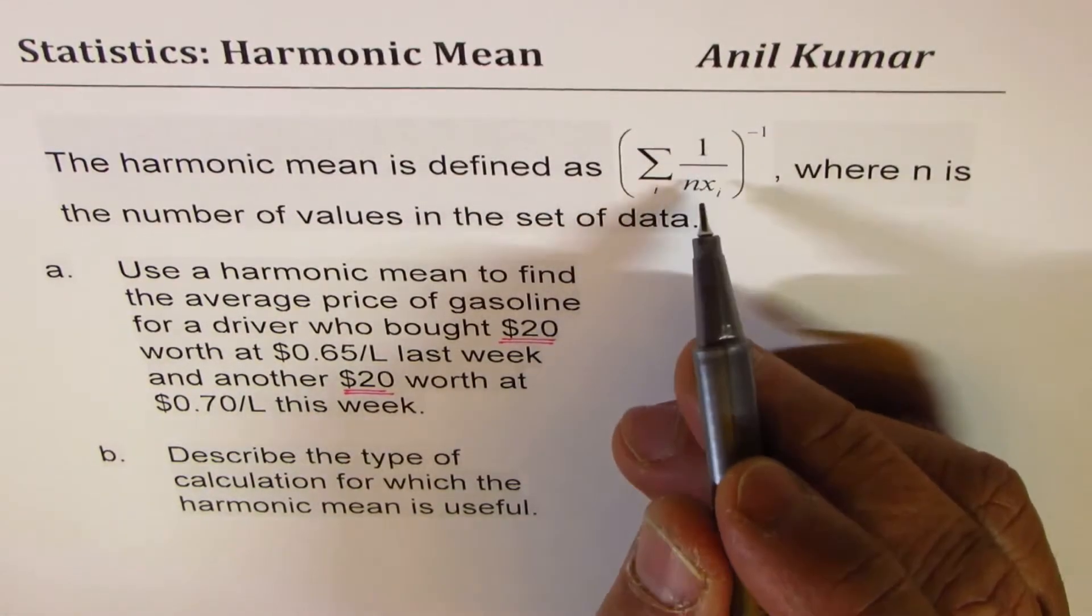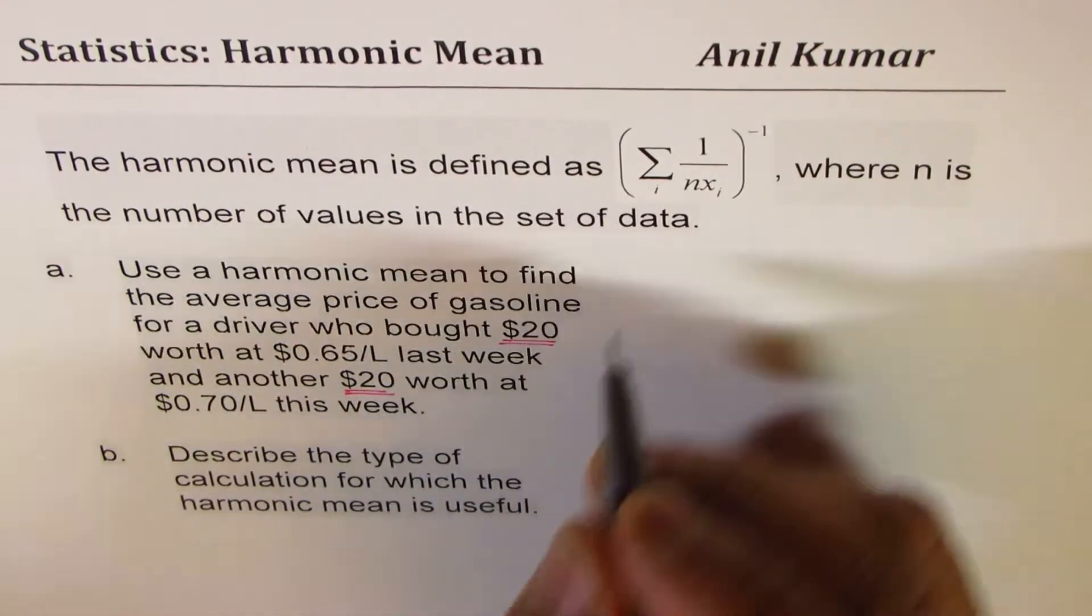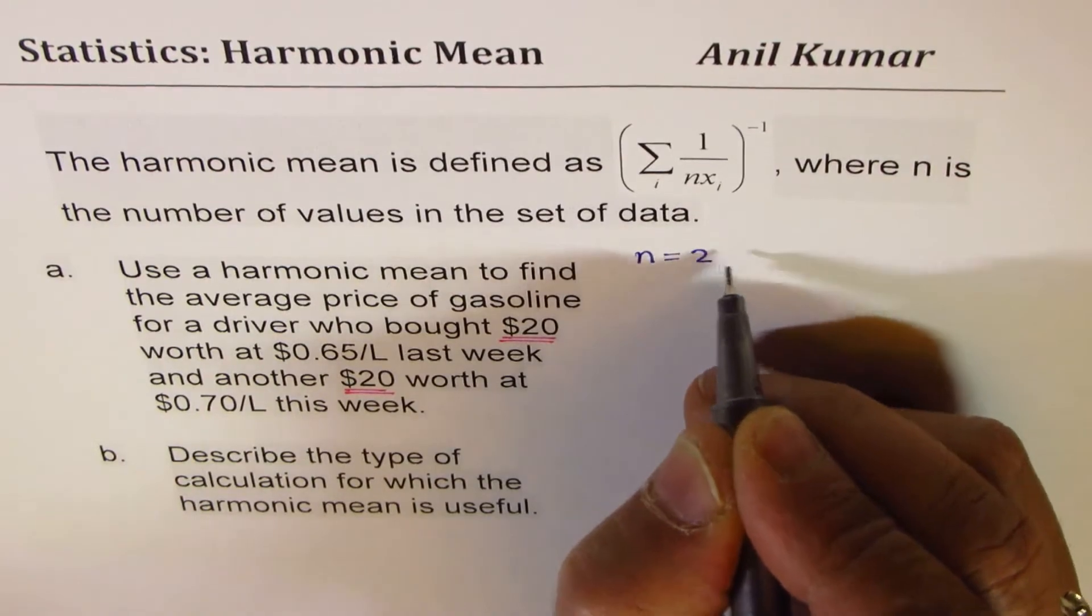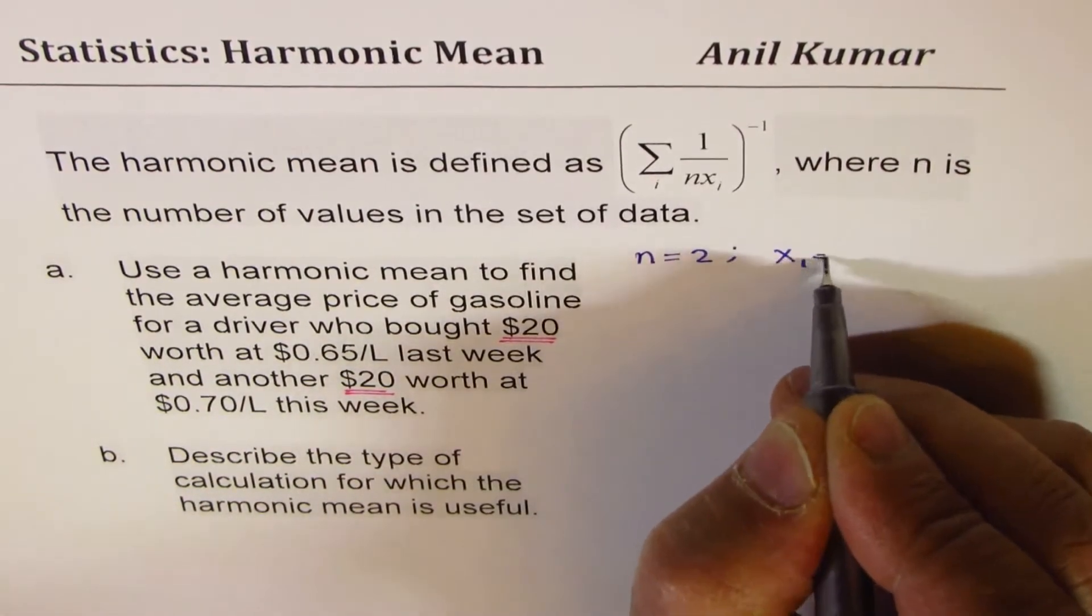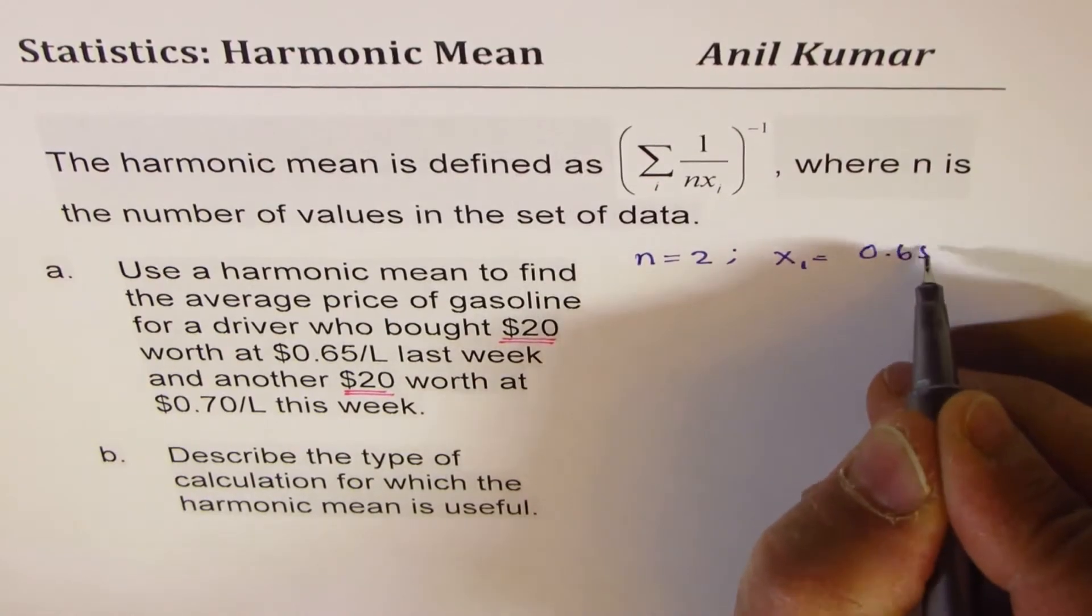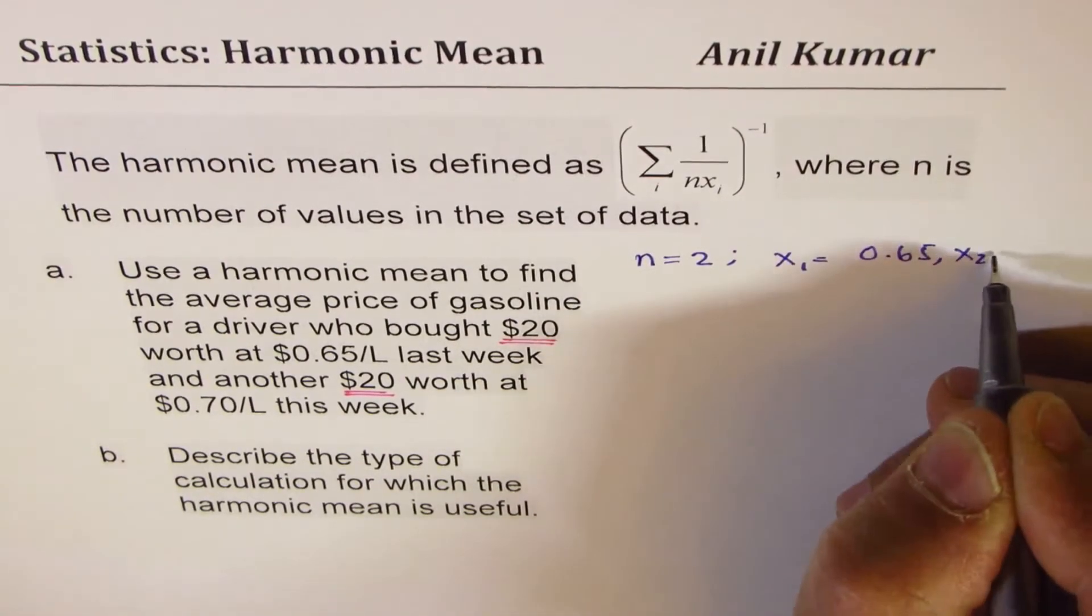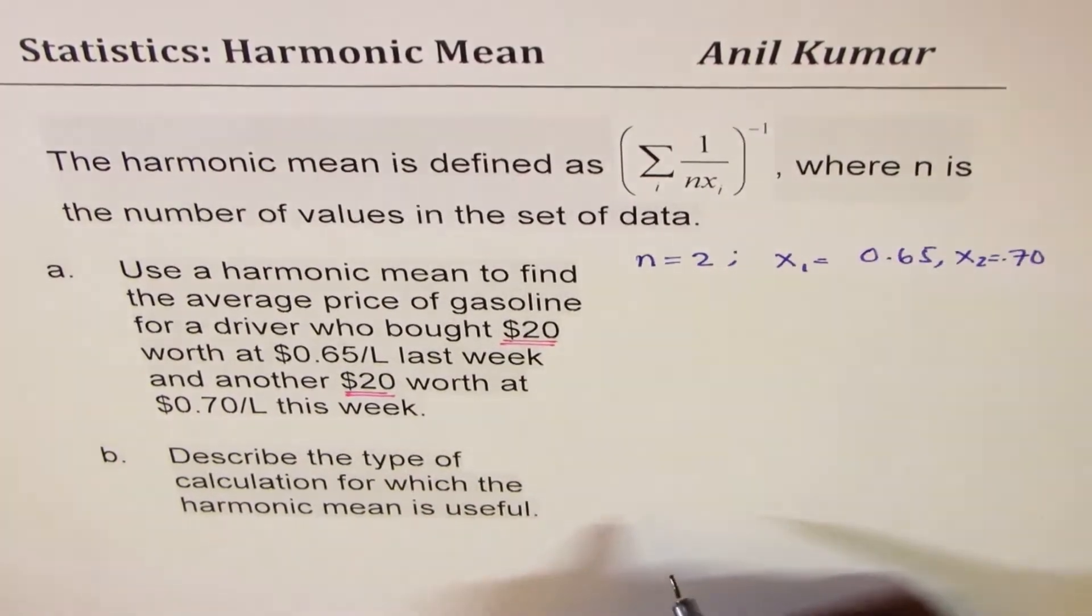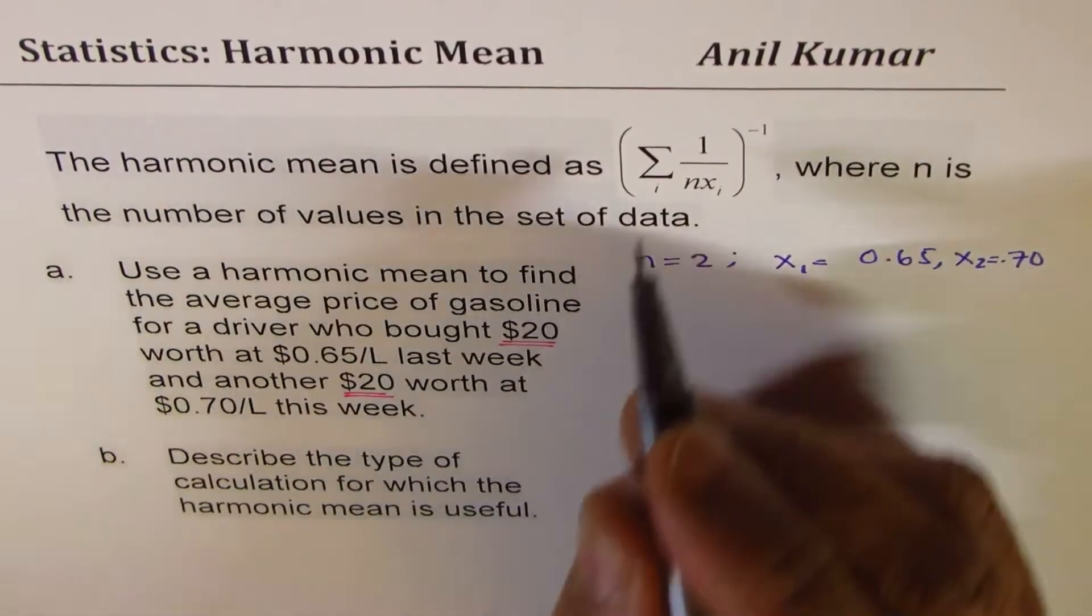Sum of 1 over n, in our case, there are two transactions. So, in our case, n is equal to 2. x1 is 65 cents, which is 0.65, and x2 is 70 cents, so 0.70. So, these are two values given to us.